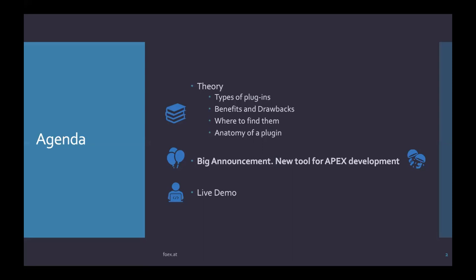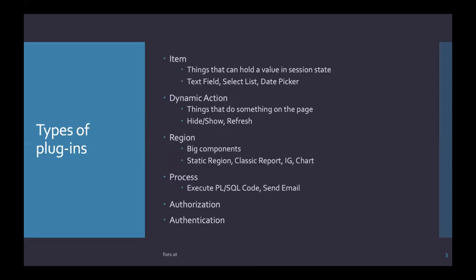What are the different types of plugins? If you think of a text field, select list, or date picker — these are all item type plugins. They hold a value in session state, so if you want a plugin with a value you submit to the backend, it would most likely be an item type plugin. Dynamic action plugins are things that do something on the page dynamically, triggered by a certain event — mostly JavaScript-based. Even simple things like hide or show are dynamic actions, or more complex things like a refresh which talks to the backend to fetch new data.